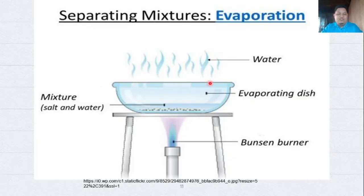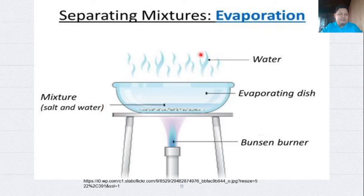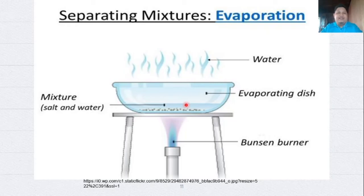Another example of separating mixtures is seawater or salt water. Whenever we get a sample from an ocean, we get a mixture of salt and water. When we apply a physical separation technique called evaporation by heating the sample, what will happen is that the water will evaporate and become steam, and what will be left is the salt. Water and salt are both pure substances — we combine them physically but we can also separate them physically, and that is what we call mixtures. That is the main idea about mixtures: they can be combined and separated physically.